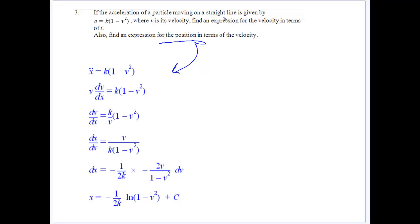This time we've got acceleration is given by k(1 - v²). v is the velocity. Find the expression of velocity in terms of t and find the position in terms of the velocity.